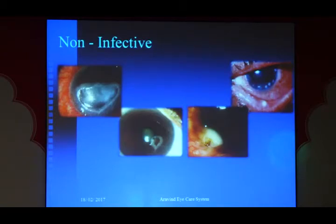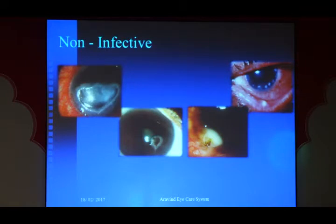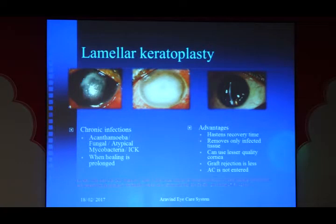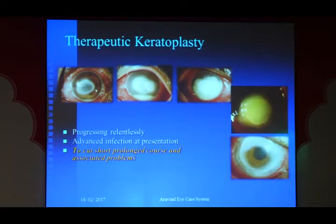Also remember that some organisms are very difficult to cultivate in culture, so keep those infections in mind. Non-infective ulcers such as neurotrophic ulcers, rheumatoid-related melts, bee sting injuries which are immunological, and staphylococcal marginal keratitis should also be considered. After titrating medical therapy, if response is not adequate — especially in chronic infections — lamellar keratoplasty can reduce infection load, and for relentlessly progressive infection, surgical intervention should not be delayed.